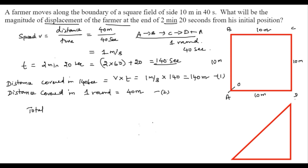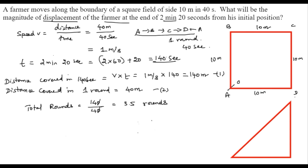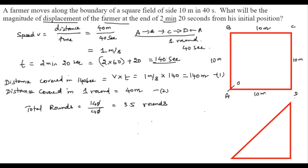Dividing equation one by equation two gives the total number of rounds = 140 / 40 = 3.5 rounds. Now we find where the farmer is at the end of 3.5 rounds. Starting from A, he completes three full rounds returning to A, then does another half round.